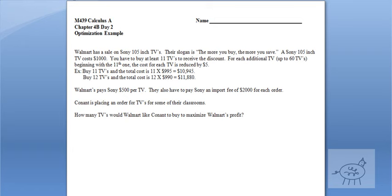For each additional TV, up to 60 TVs, beginning with the 11th one, the cost for each TV is reduced by $5. So what I mean is, the first 10 TVs, if you buy 10 TVs, you get normal price. If you buy 11 TVs, that means all 11 of them are reduced by $5. So that's why I even have an example here. If you buy 11 TVs, the total cost is $11 times $5 off of all of them. So 11 times $995 is $10,945.